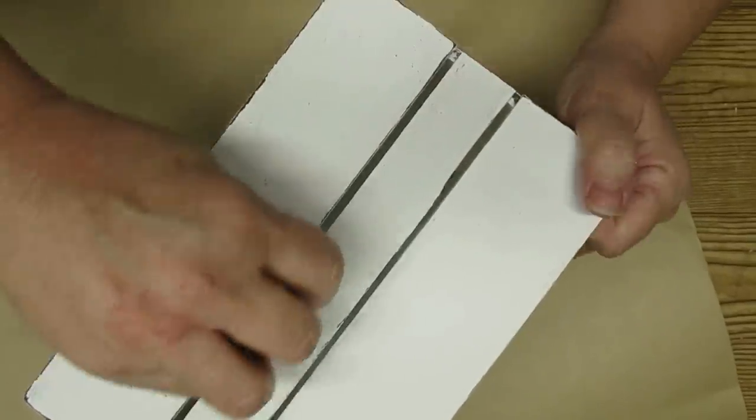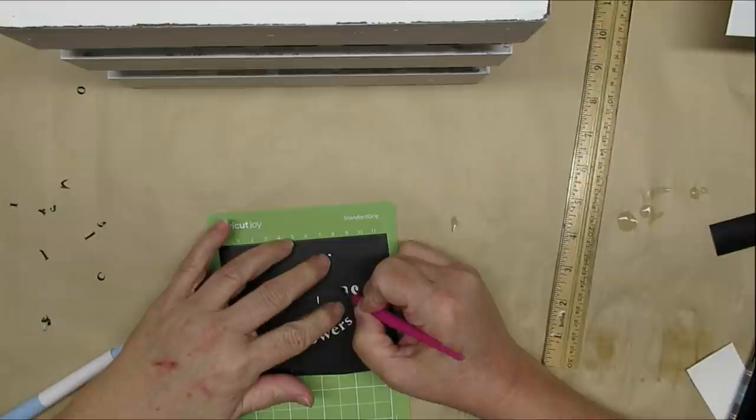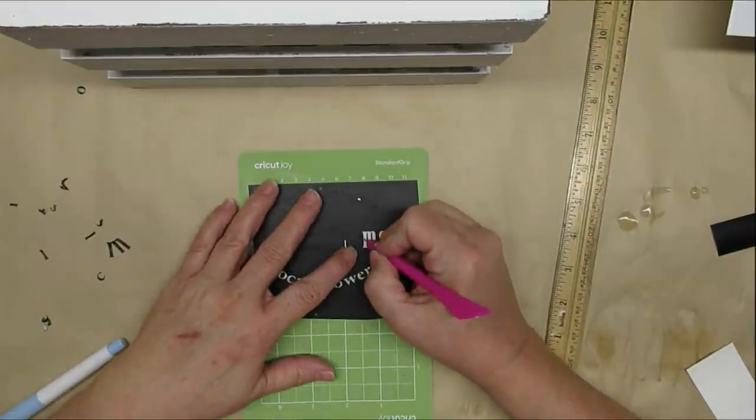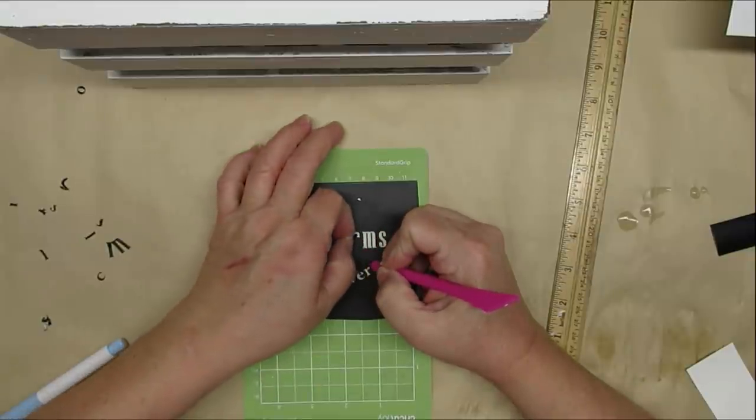Using my Cricut Joy, I'm cutting out a stencil, and here I'm just weeding out all of the small little tiny pieces. This will be available as a free printable on my website, which is down in my description box.